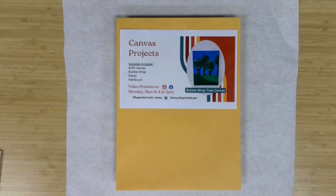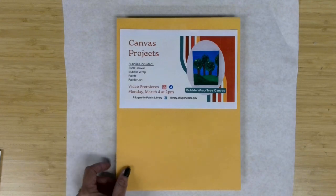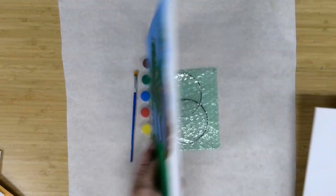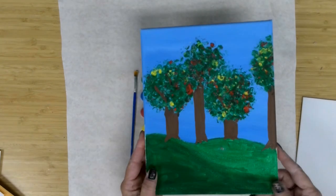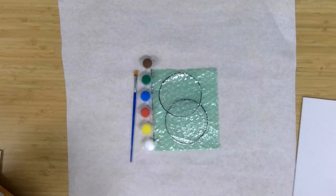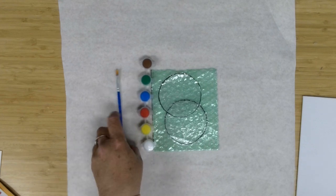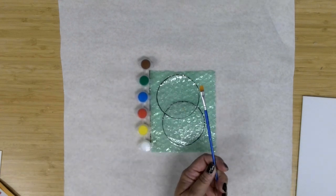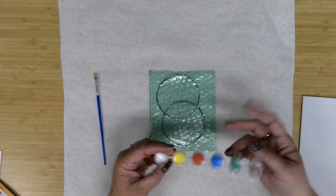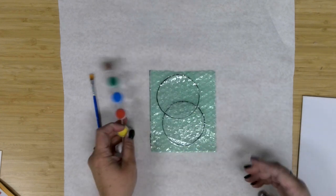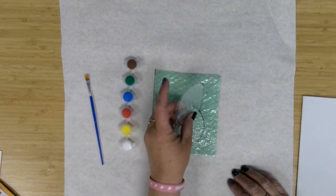This month's project is bubble wrap trees. Let's start with a look at the supplies being provided. In our envelopes you are getting an 8x10 canvas. I'm going to paint today on a canvas panel but you are getting a standard 8x10 canvas. I also have a flat paintbrush in this kit, your paint palette, some primary colors there, and then the bubble wrap pieces.